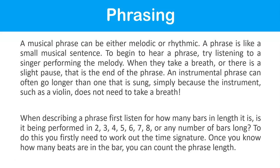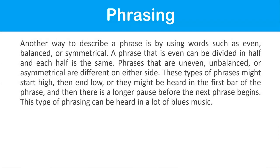When describing a phrase, listen for how many bars in length it is — two, three, four, five, six, seven, or more. To do this, work out the time signature first, then count the phrase length. Another way to describe a phrase is as even, balanced or symmetrical — a phrase that can be divided in half where each half is the same. Uneven, unbalanced or asymmetrical phrases are different on either side; they might start high then end low, or have a longer pause before the next phrase begins. This type of phrasing can be heard in a lot of blues music.